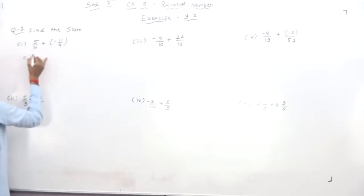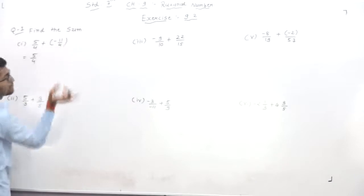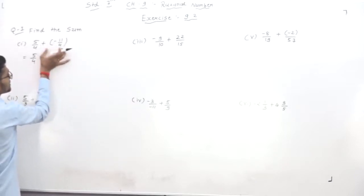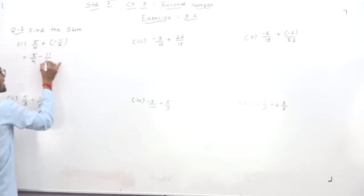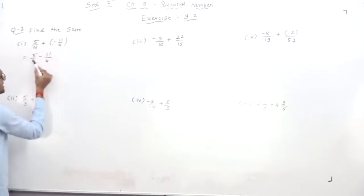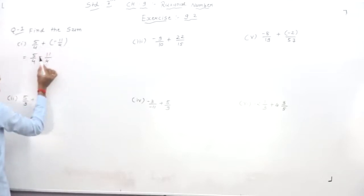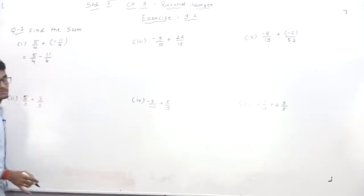Write down 5/4. Now remove the bracket — plus and minus gives minus. So we have 5/4 minus 11/4. The denominator is already the same, so we do not need to find the LCM.